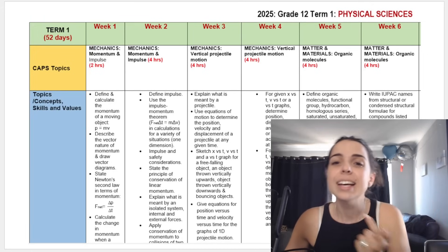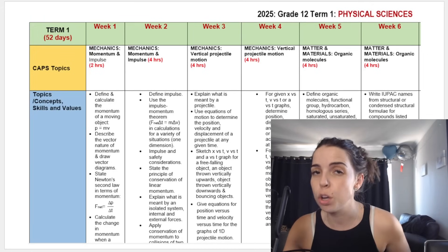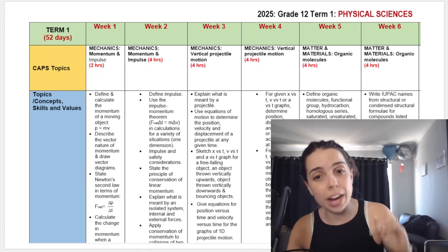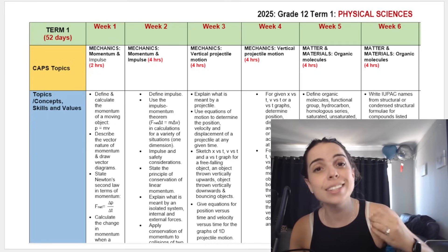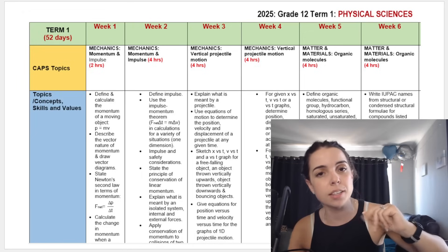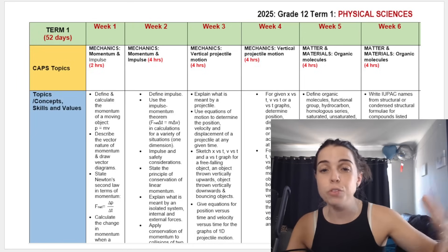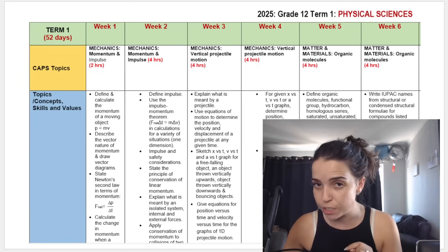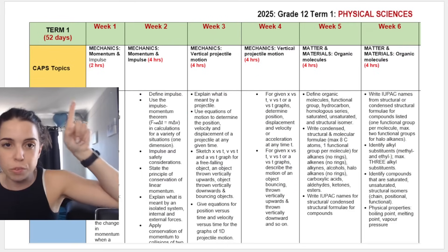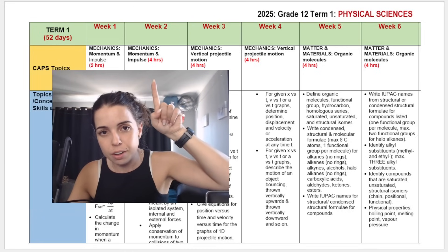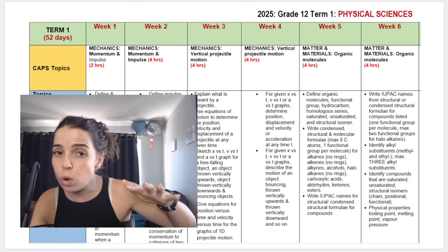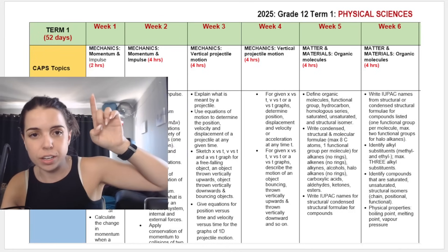What you can see behind me is, for example, the grade 12 term one Physical Sciences ATP. They have one for every grade and for every subject — so if you're in grade 8, 9, 10, 11, or 12, you can find the ATP for all your subjects. This one happens to be for grade 12 Physical Sciences. You can see there are topics, subtopics, and it indicates approximately how long each section should take — roughly one week per topic block.